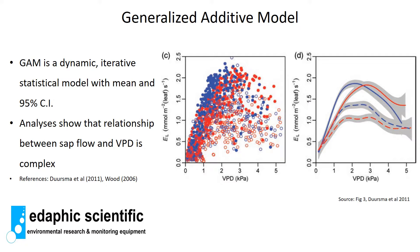One question to ask is whether the relationship between sap flow and VPD is really so straightforward — does it actually follow a logistic regression curve? In a paper by Dursma et al. in 2011, we had transpiration versus VPD with blue and red dots for different treatments. We could have just applied a simple logistic regression curve over that messy scatter and found some kind of relationship.